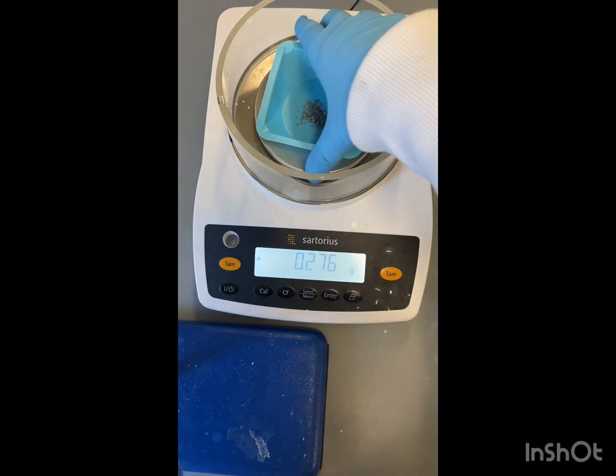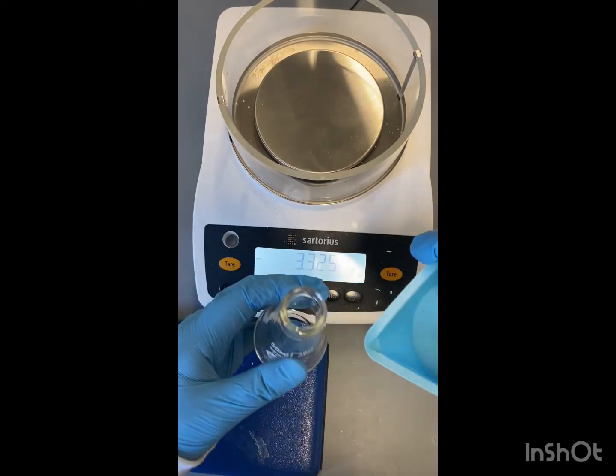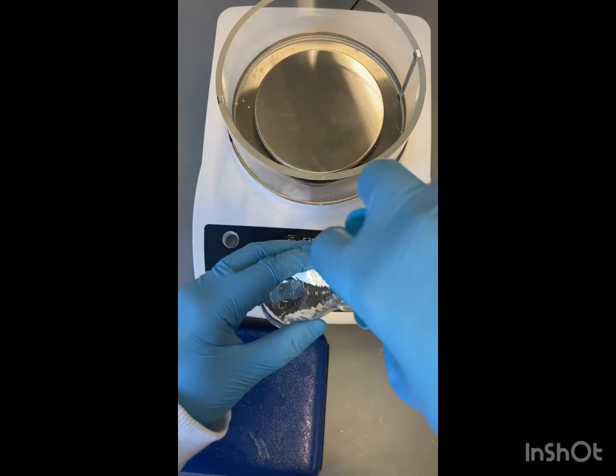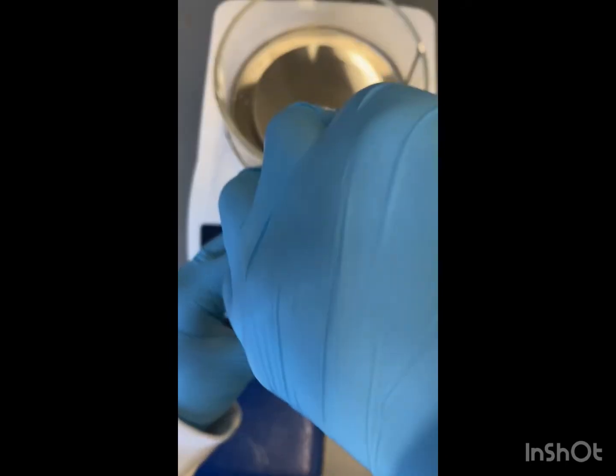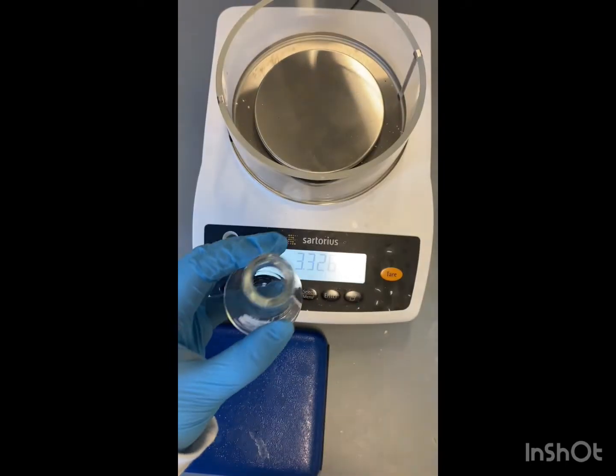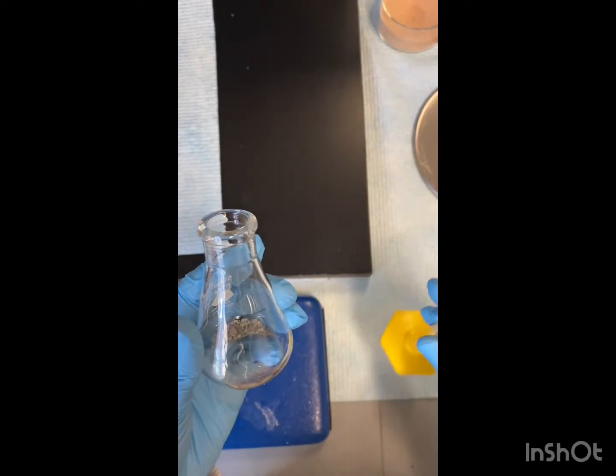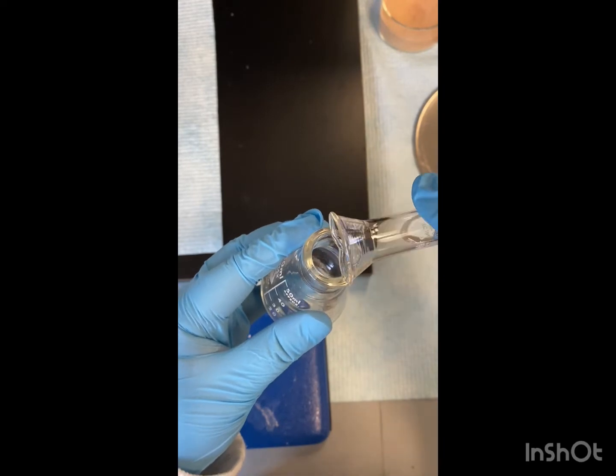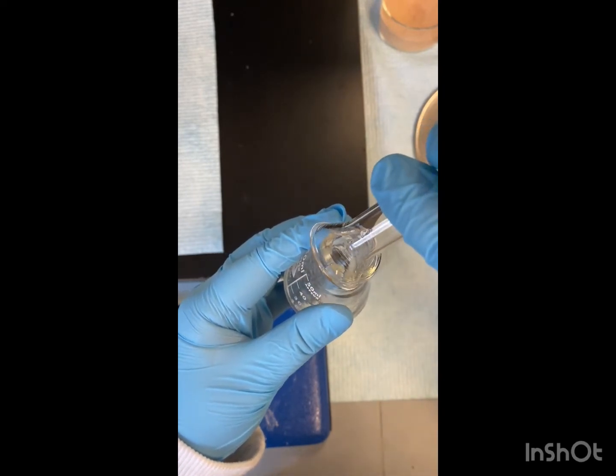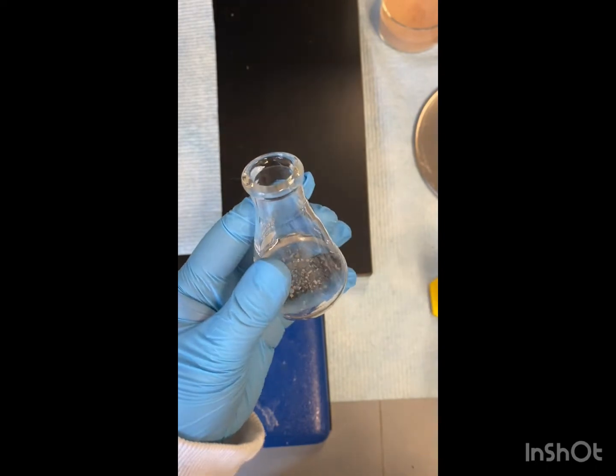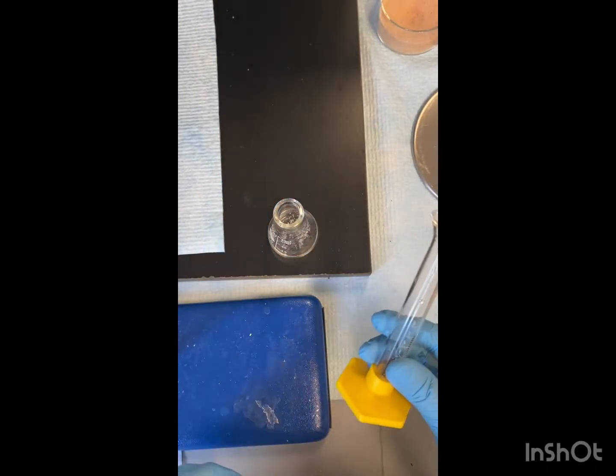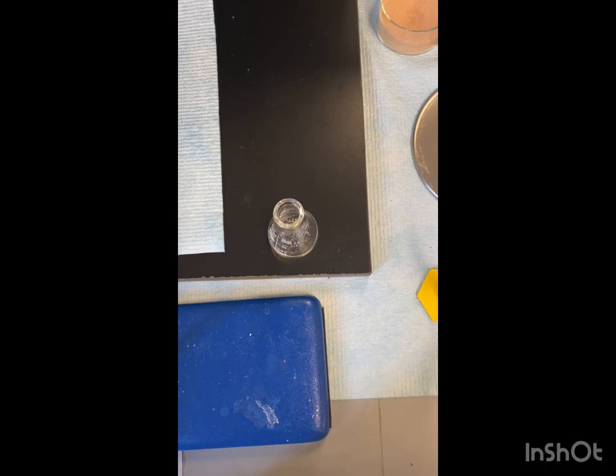We're going to add our benzoic acid to our flask. So we've got our benzoic acid in our flask. Now we're going to add 10 ml of distilled water. And then we're going to get more distilled water and put it in a different flask, and put both of these on our hot plate until they reach a boil.